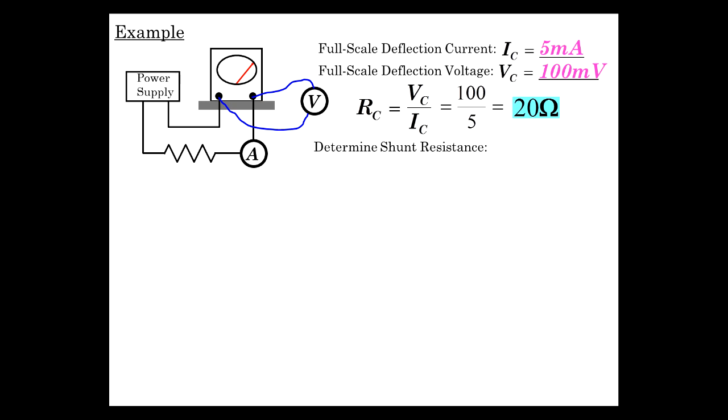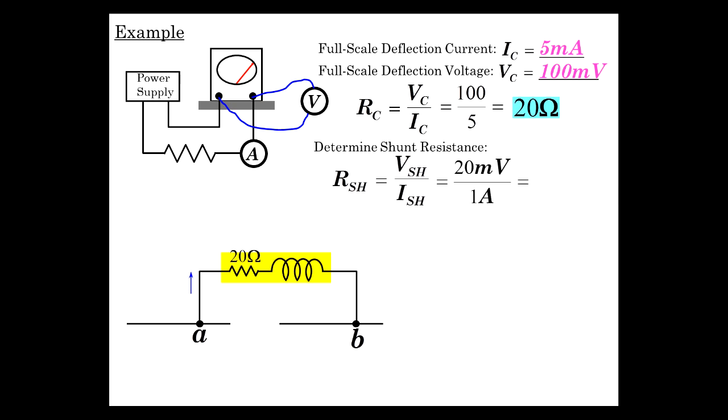So you measure the shunt resistance. So you take the ammeter and voltmeter externally. And that's what's going to go here. And so you take measurements on it. You know it's volts over current.